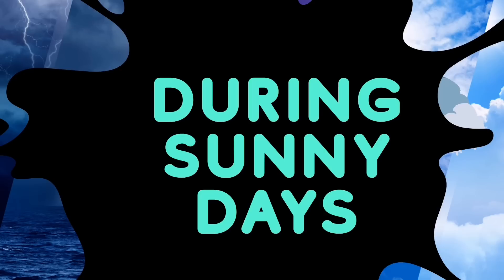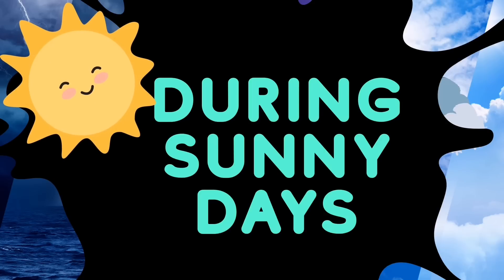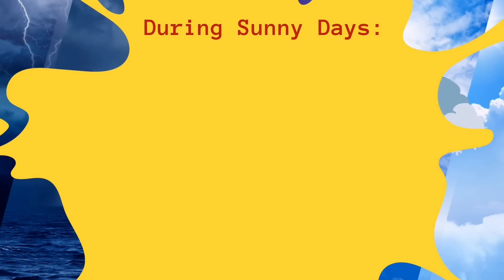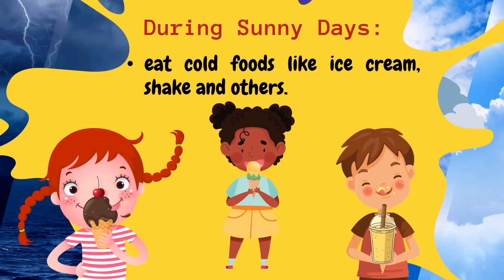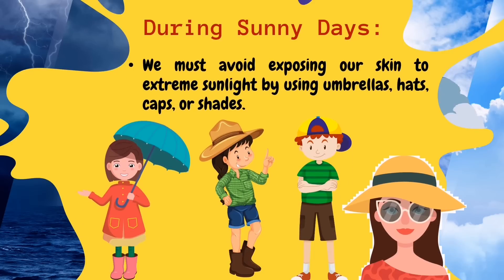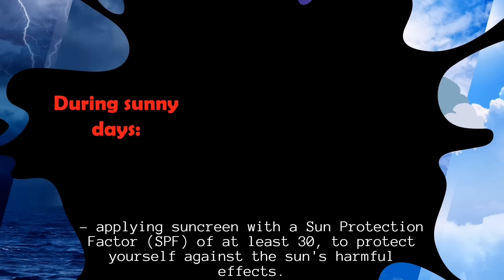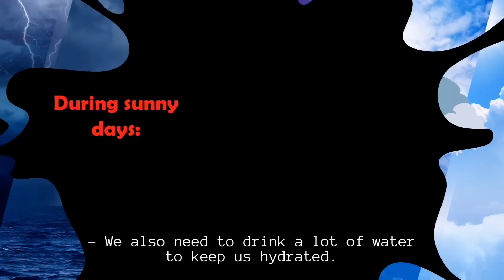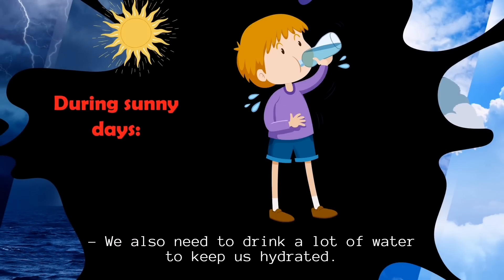During sunny days, we wear light or thin clothes, and we eat cold foods like ice cream or shakes. We must avoid exposing our skin to extreme sunlight by using umbrellas, hats, caps, or shades. Applying sunscreen with a sun protection factor of at least 30% helps protect yourself against the sun's harmful effects. We also need to drink a lot of water to keep us hydrated during sunny days.